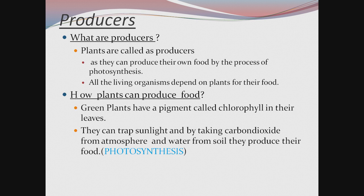Those who produce anything are called as producers. What are producers in our ecosystem or in our surrounding? Plants are called as producers. Why? As they can produce their own food by the process of photosynthesis, and all the living organisms depend on plants for their food, directly or indirectly. Because of these two reasons, plants are called as producers.